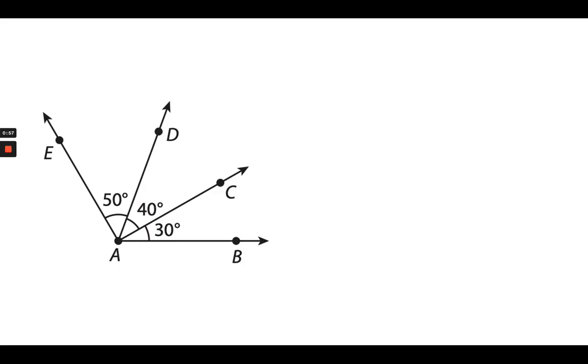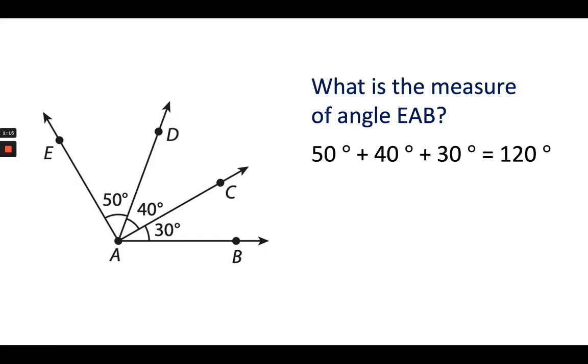Let's take a look at this problem. So if I wanted to determine angle EAB, so E, A, and B, I would be composing these three angles together. So I would need to add 50 plus 40 plus 30, which would give me 120 degrees. Okay, that would be the total of all three of these angles combined.